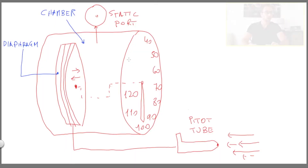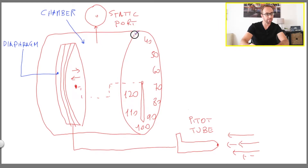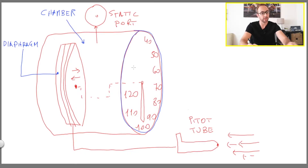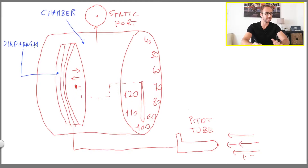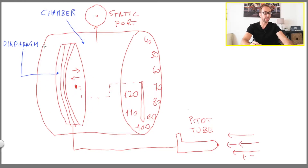But how does the airspeed indicator actually work? Looking at the whiteboard, what the pilot sees on the flight deck is the indicator face where you read your speed. Behind the airspeed indicator you have the chamber — all these parts here — and very importantly the diaphragm. The chamber is connected to the static ports and the diaphragm is connected to the pitot tube.